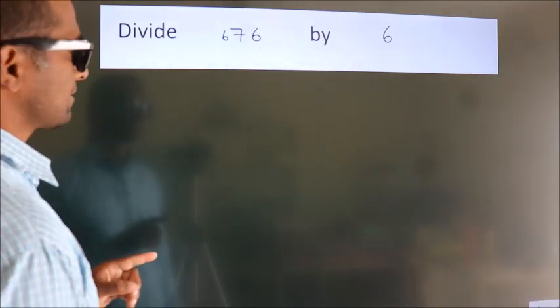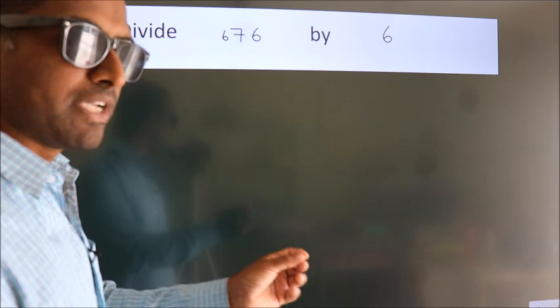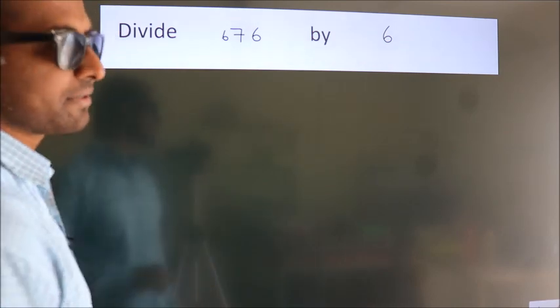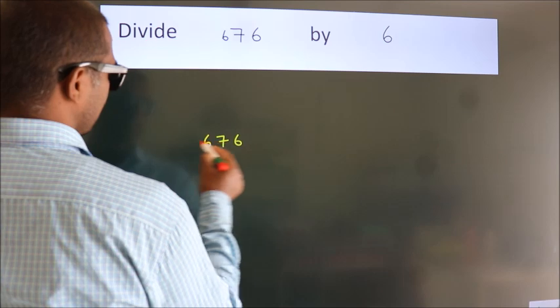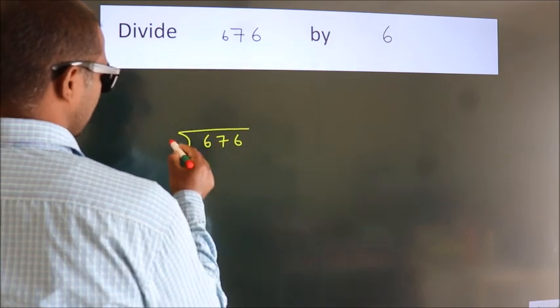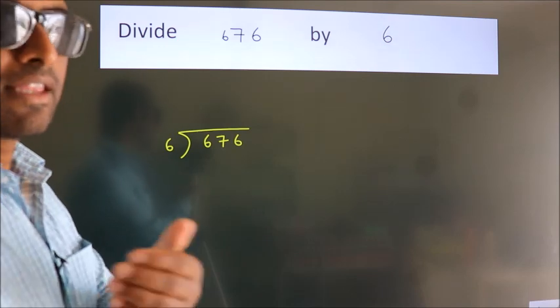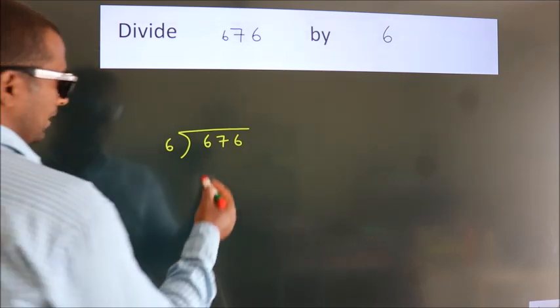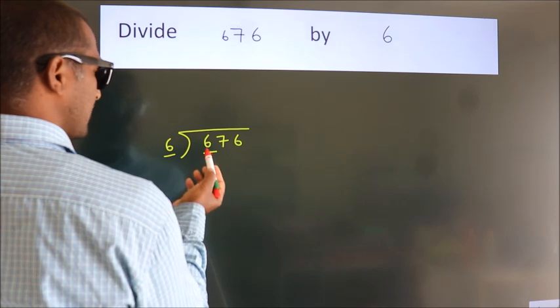Divide 676 by 6. To do this division, we frame it this way: 676 here, 6 here. This is step one. Next, we have six here. When do we get six in the six table?